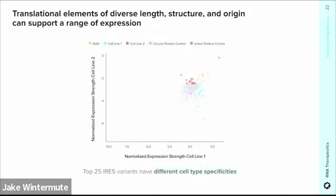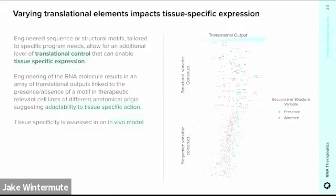We can take advantage of differences in expression across different cell lines to choose or engineer a construct with additional layers of tissue specificity. We have a plot correlating expression levels across two cell lines of different tissue origin — we've identified sequences that perform similarly across these cell lines and also some sequences that drive expression differently between the two cell lines. This type of screening allows us to identify IRES sequences that drive translation in a sequence- and tissue-specific manner. We also have the possibility of engineering circular RNAs containing sequence or structural elements that influence translation in a way that allows a certain level of expression control, which can be deployed toward achieving tissue-specific expression.